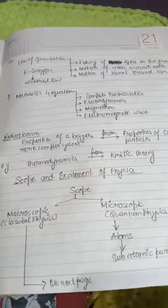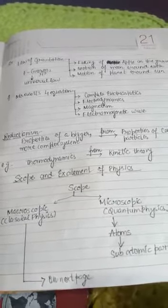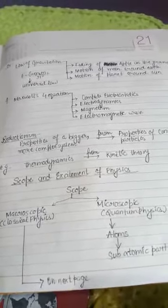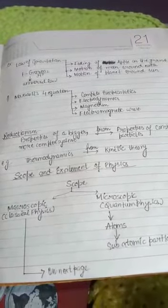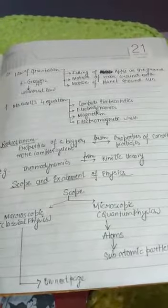Now what are the scopes and excitement of physics? The basic scope is divided into two parts, macroscopic and microscopic, that you can read from the flowchart that I had given here.